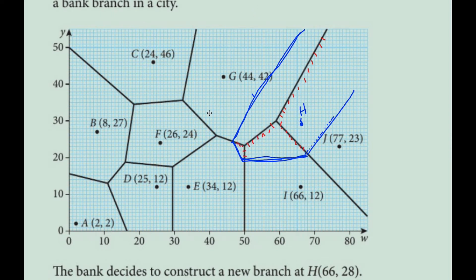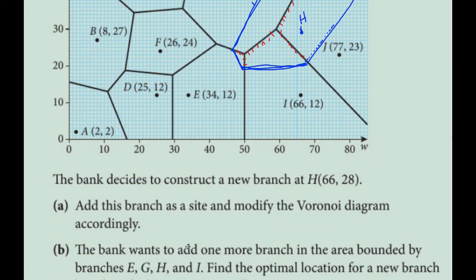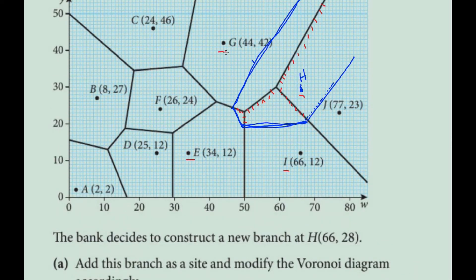Okay, so that is part A. Now part B says the bank wants to add one more branch in the area bounded by E, G, H, and I. So here is G. When I look at that, I want it to be bounded by here, so I'm looking at this vertex, this vertex, and that's the only one bounded by those points, because this is bounded by J, this one's bounded by E and H. This is E, G, H, so I'm looking at these two values here.